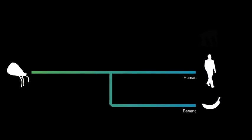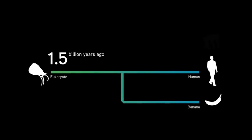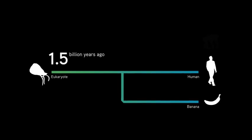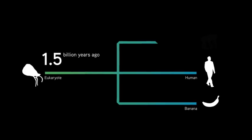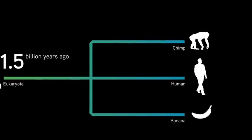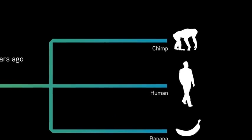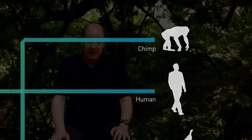That ancestor probably lived about 1.5 billion years ago and was an early form of eukaryote. But you and chimps also share a common ancestor. That ancestor lived much closer to today, a mere seven million years ago, which is just an eye blink in geological time.